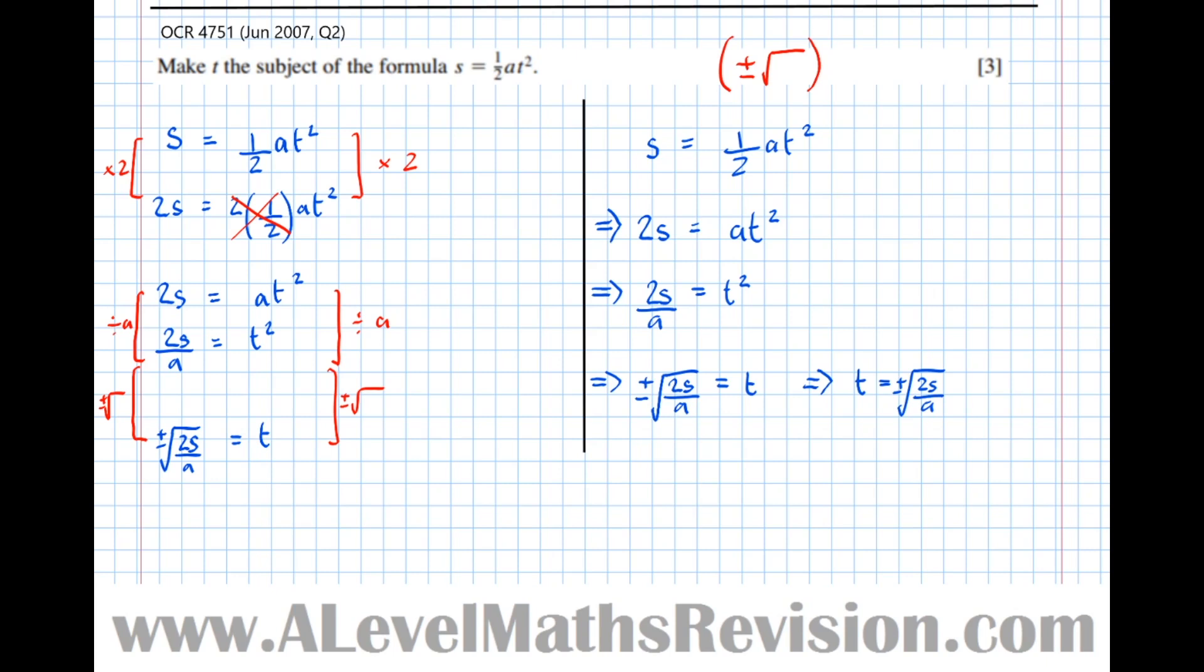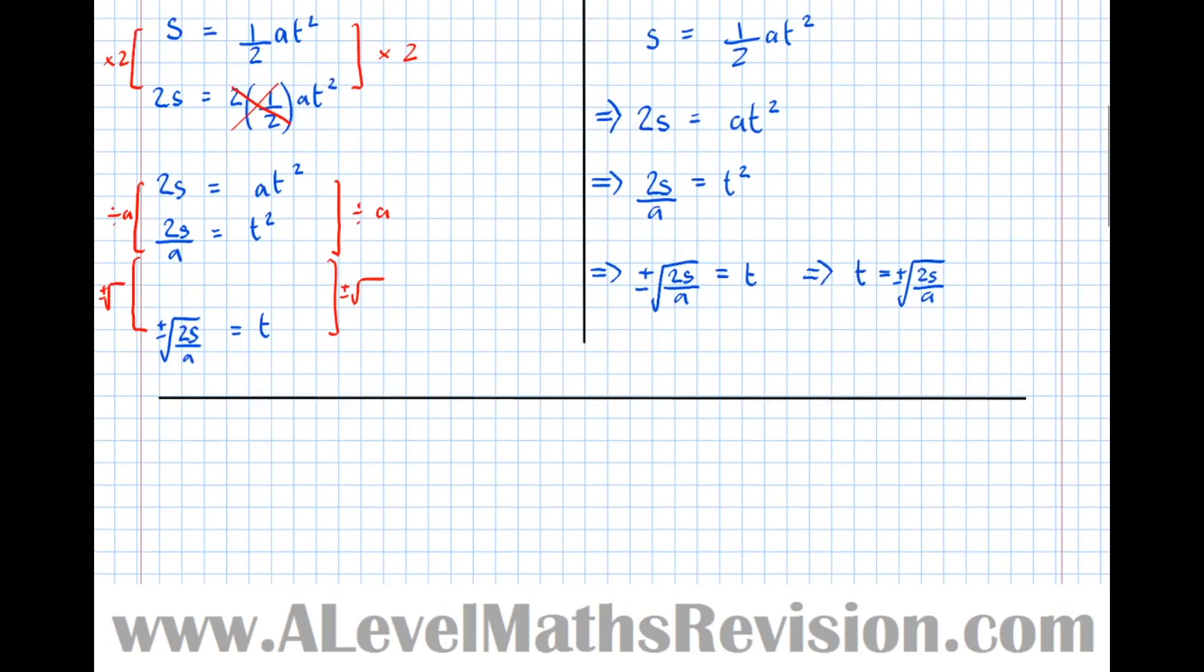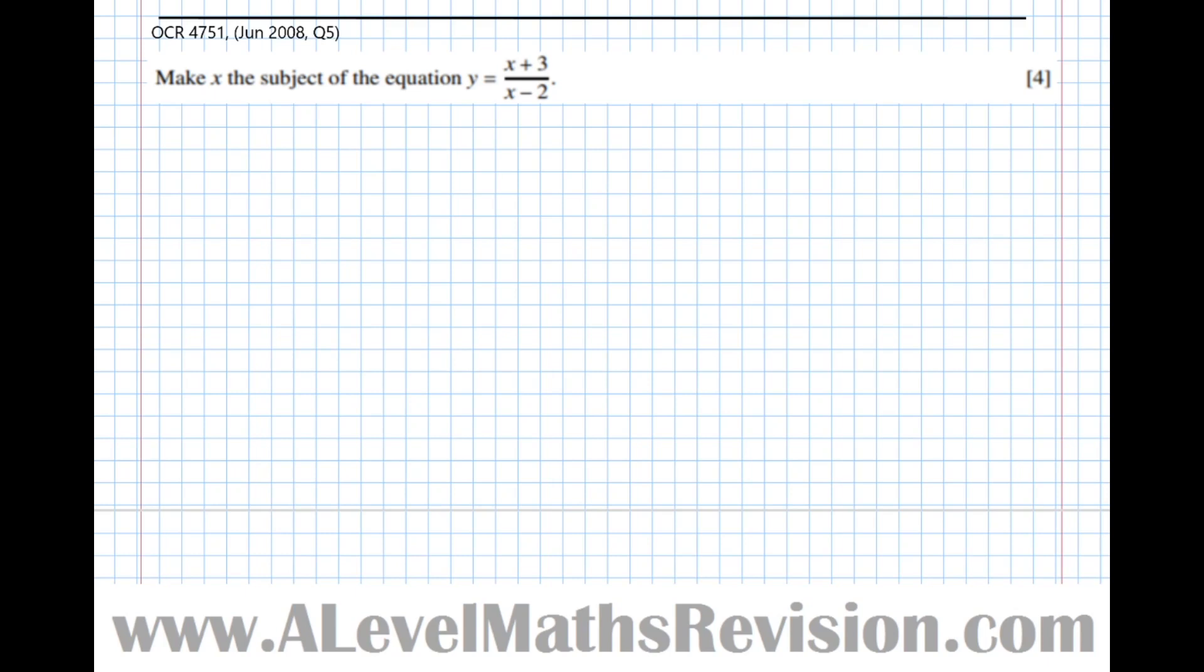There's one more thing I want to go through with you before I think you're ready to be let loose on the questions. This question says make X the subject of the equation Y equals (X + 3)/(X - 2). This is a sort of example where students fall over all the time. A common incorrect thing to do would be to say we've got X on top and X on bottom, so let's just cancel them out. Well, that's such a bad thing to do.